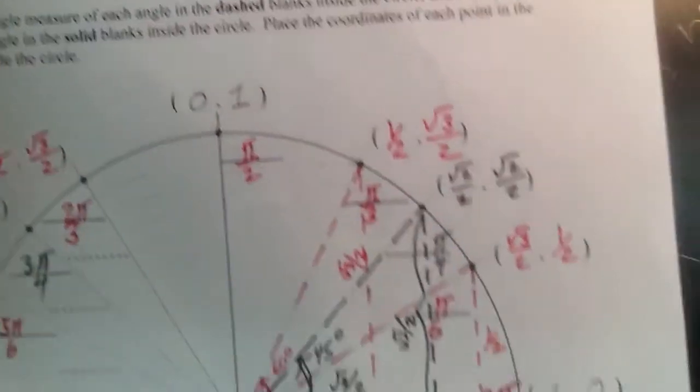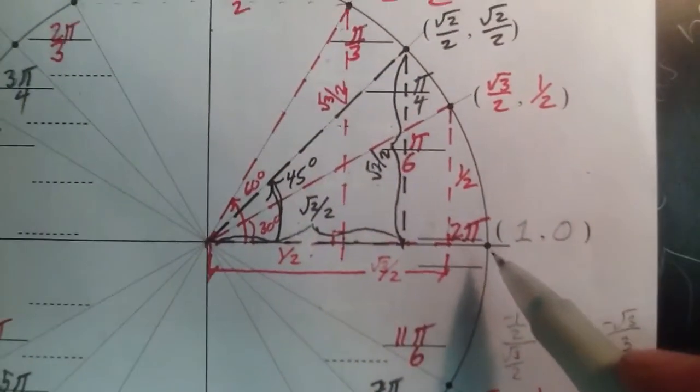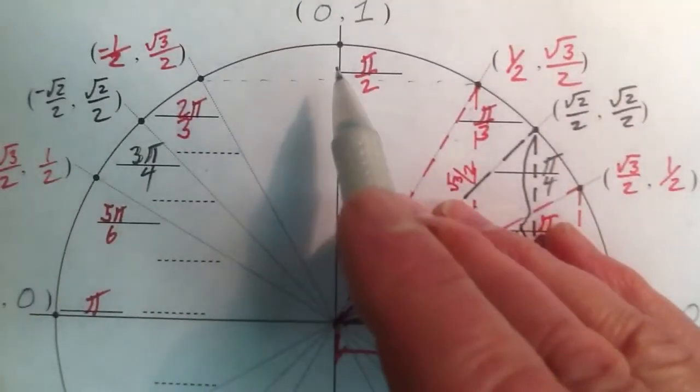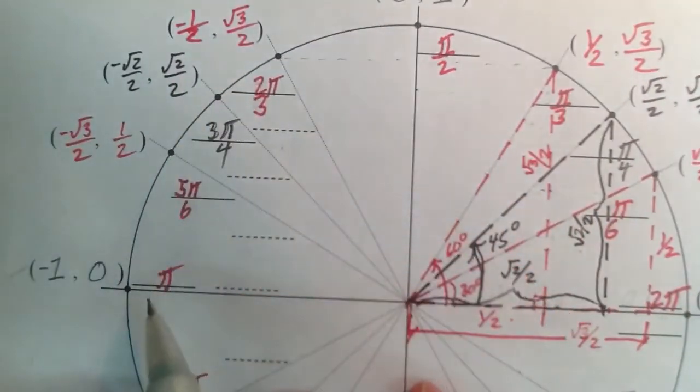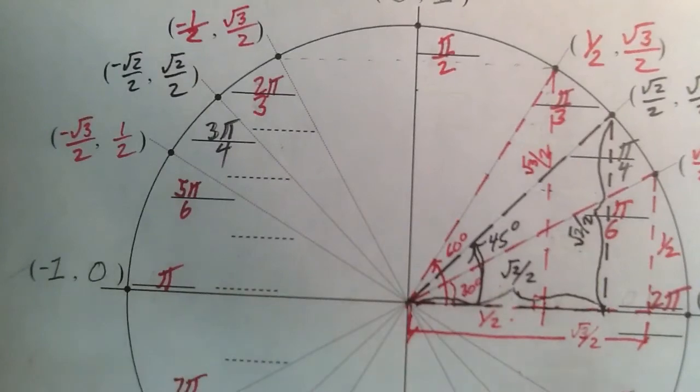Let's look at π over 4, quarter pi. So there's 0, 1 quarter, 2 quarters, 3 quarters, 4 quarters, so on and so forth.